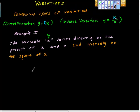In our example, the variable w varies directly as the product of u and v, and inversely as the square of s. I think it's good that we color code this because you can see here that we have a direct variation and we also have an inverse variation.